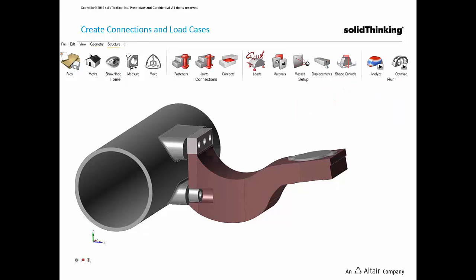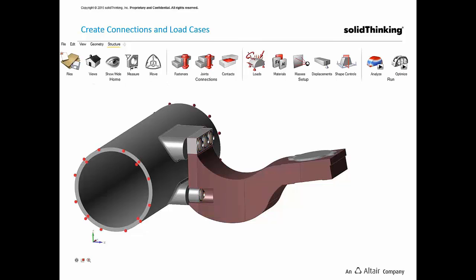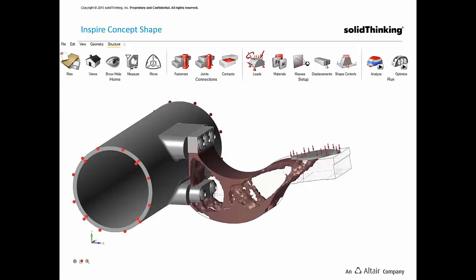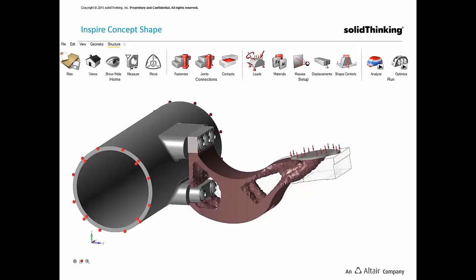Once the design space is created, we can create fasteners like screws and bolts. Here, screws are being created to attach this part to the main assembly. Further, supports are applied and forces are created. We can also find different contacts which INSPIRE is creating in the background. Once the contacts are created, you can run iterations and INSPIRE generates concepts within minutes.